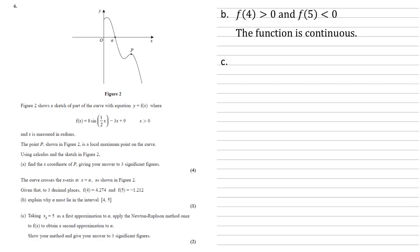For part c, taking x0 equals 5 as a first approximation to alpha, we need to apply the Newton-Raphson method once to f of x to obtain a second approximation to alpha. We need to show our method and give our answer to three significant figures. Our formula for the Newton-Raphson method is x1 is equal to x0 minus f of x0 over f dash of x0.